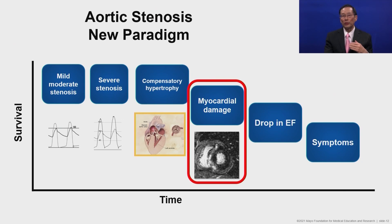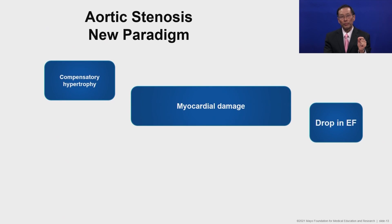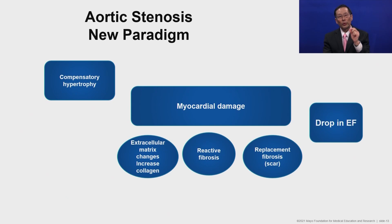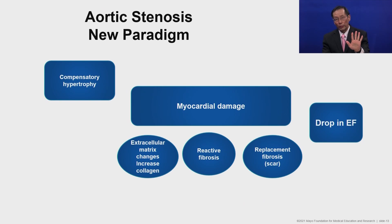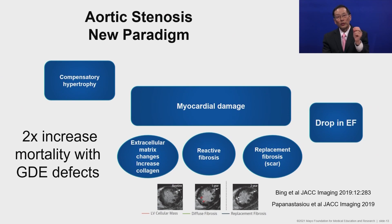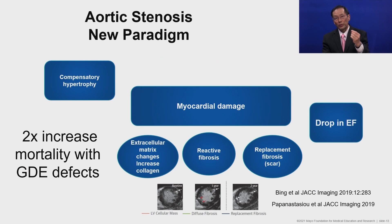The compensatory hypertrophy itself could go on for years to normalize wall stress, but during that time myocardial damage would occur. It would first start with extracellular matrix changes with increased collagen, then develop reactive fibrosis — both reversible — and then replacement fibrosis, which is a true scar of the myocardium, after which myocardial function starts to diminish. This has been evaluated with strain imaging on echocardiography and, more recently, with MRI gadolinium enhancement defects, which can identify extracellular matrix changes, reactive fibrosis, and replacement fibrosis.